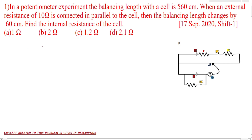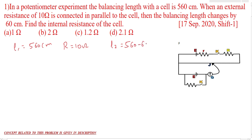What is given? The balancing length L1 is 560 centimeters. Then, when an external resistance of 10 ohm — that is capital R equal to 10 ohm — is connected parallel to the cell, the balancing length changes by 60 centimeters. So the new balancing length L2 will be 560 minus 60, that is 500 centimeters.